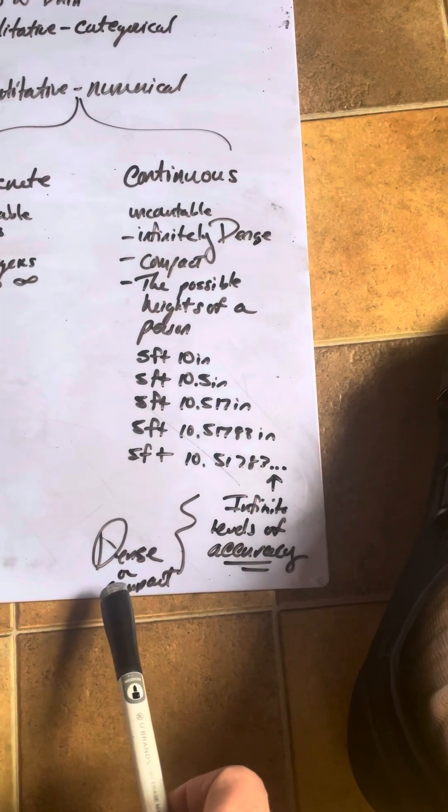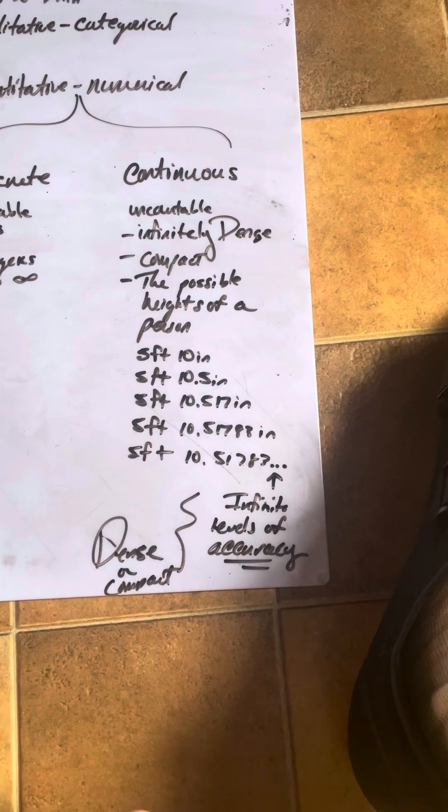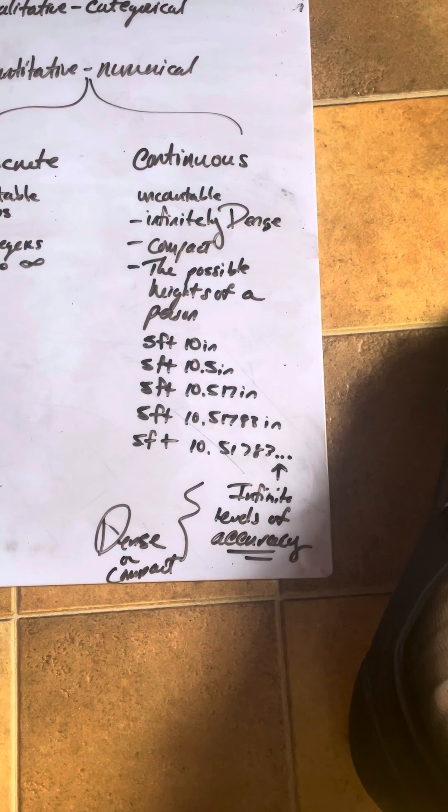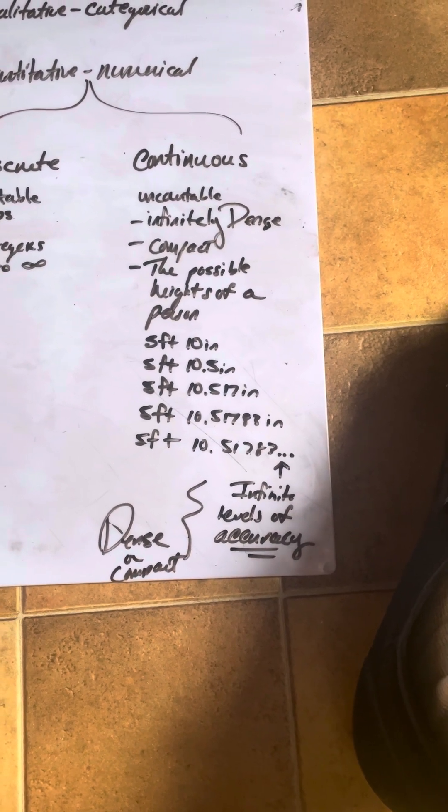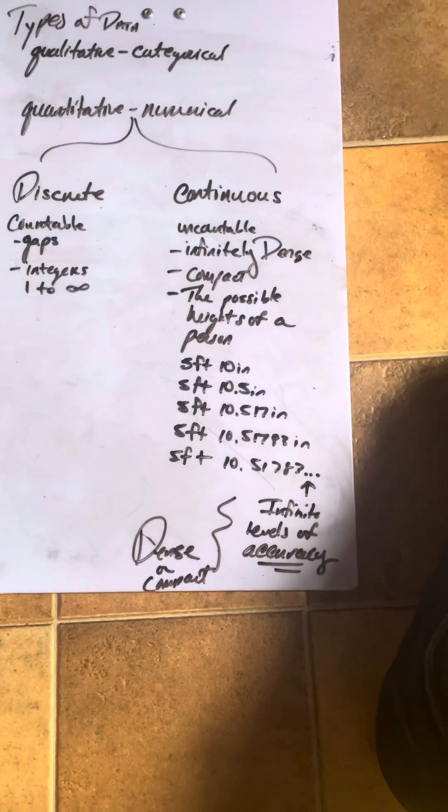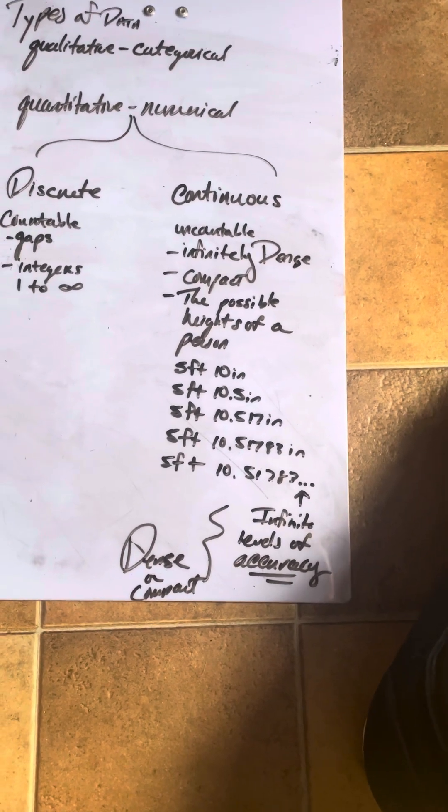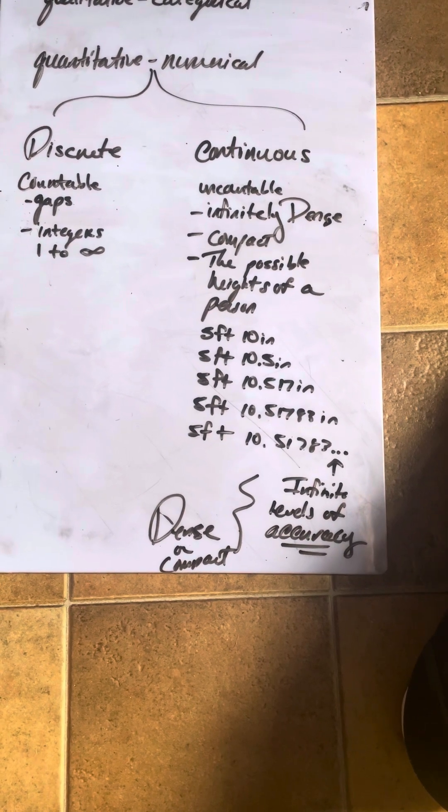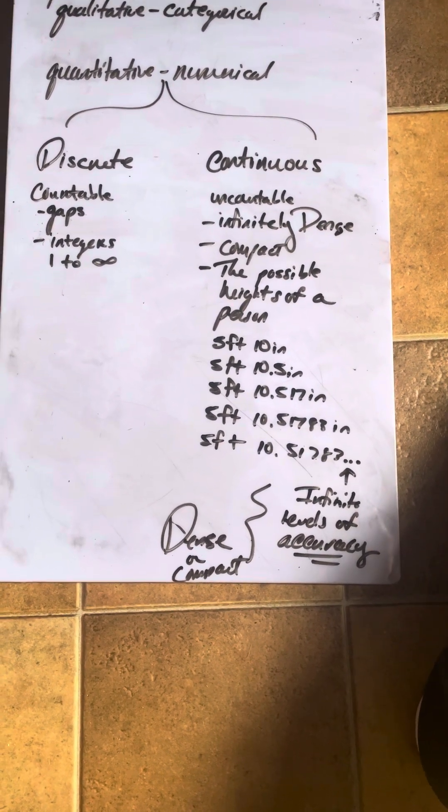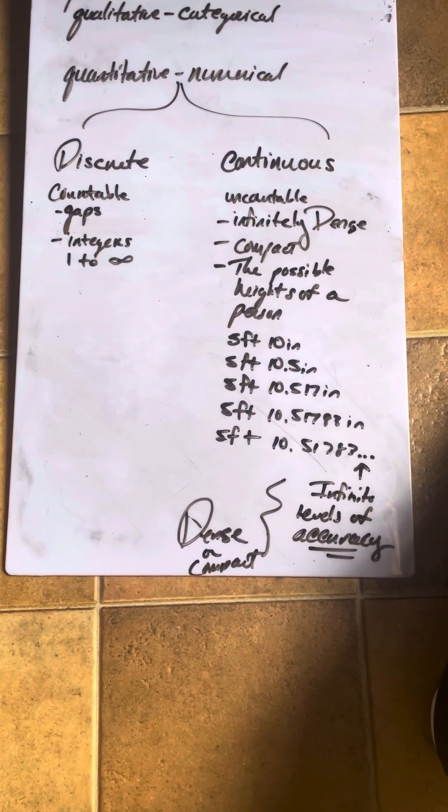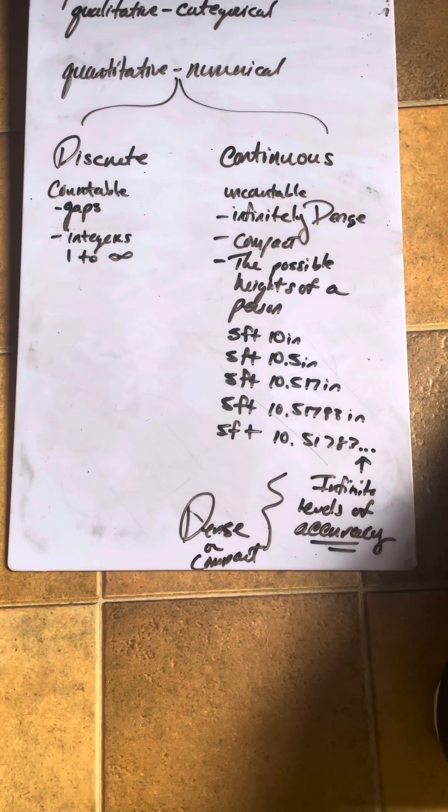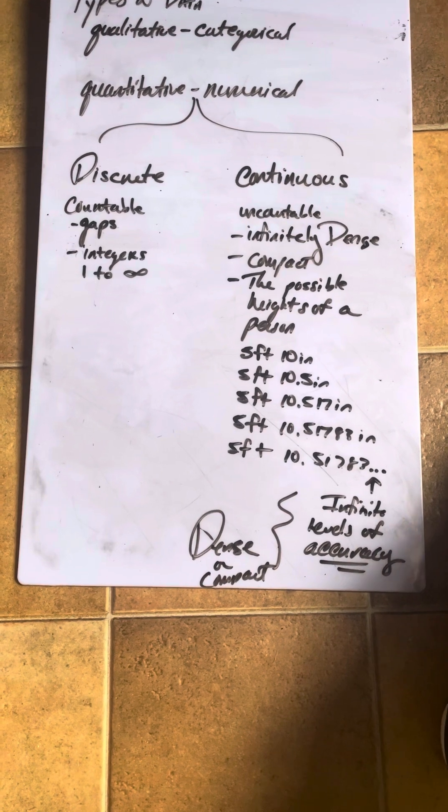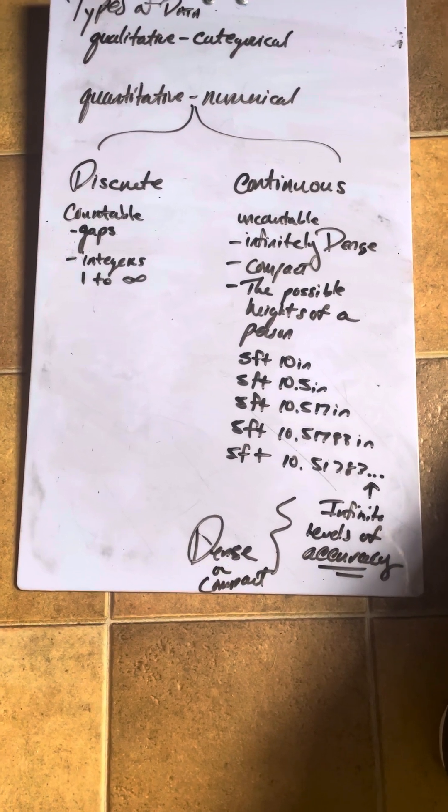Height and weight are generally considered continuous. But again, there is some debate in there, and you can argue, well, we're only going to talk about height in terms of feet and inches. Well, then you're really kind of in the discrete world because you're not able to refine it more, but normally height and weight are considered a continuous measurement.